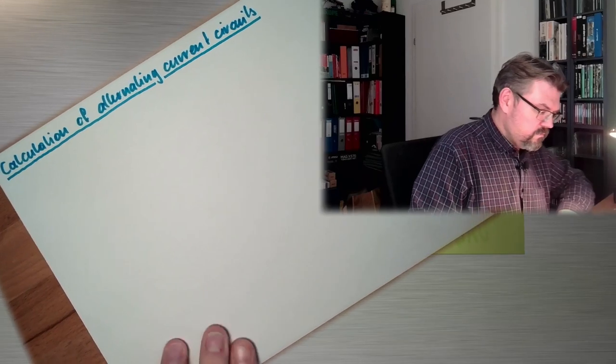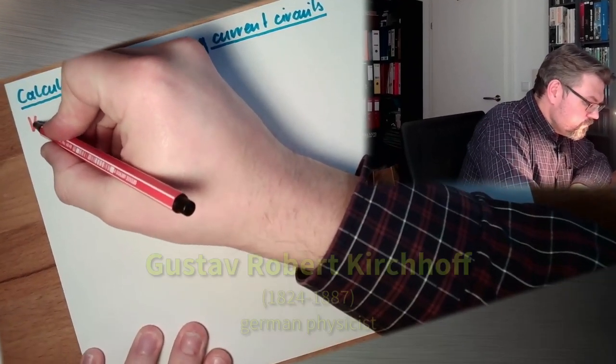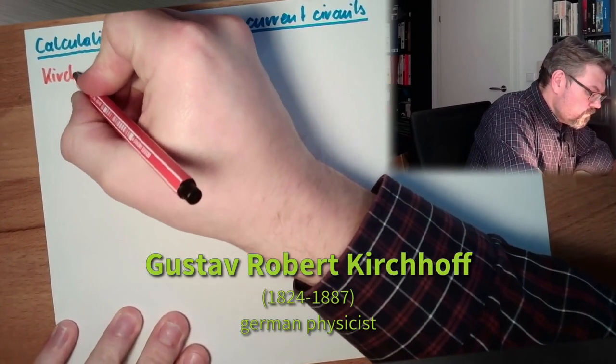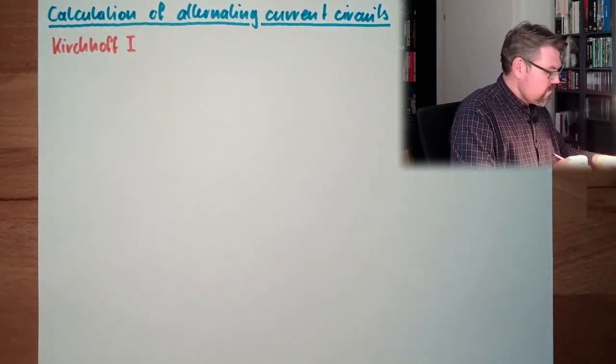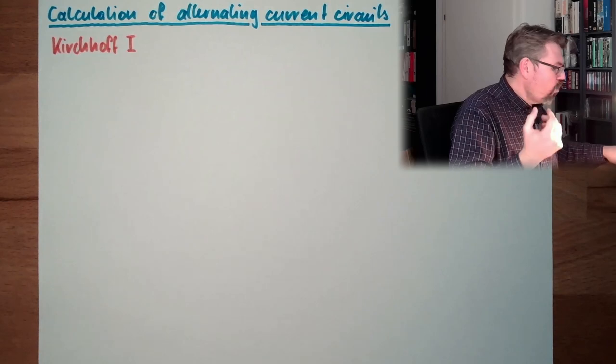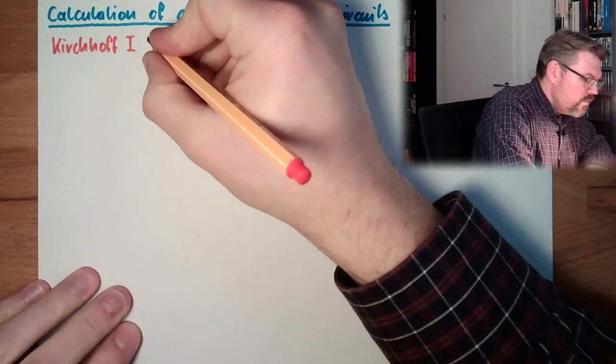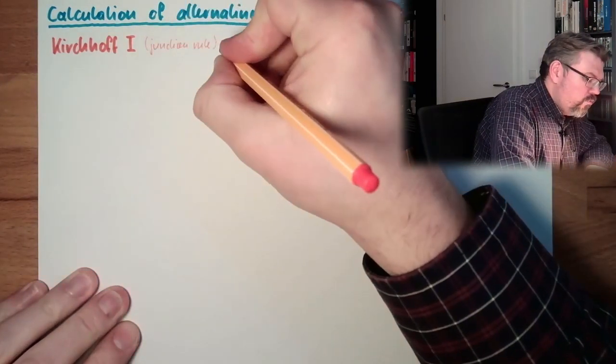Let's start as we have started with DC circuits, with Kirchhoff's laws. Gustav Kirchhoff's laws. Kirchhoff 1, this was the Junction Law, Junction Rule, Node Rule.